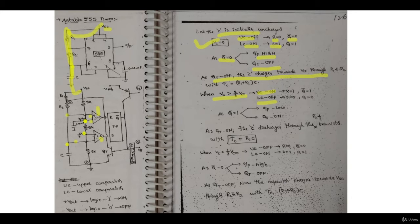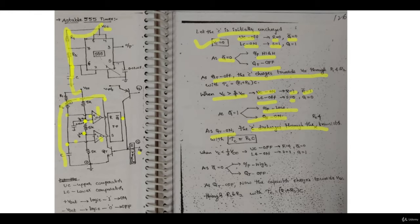So R will be 1 and S will be 0, which gives Q-bar equal to 1 - meaning the output at terminal 3 will be low and Qt will be on. When Qt is on, the capacitor tries to discharge through resistor R2. The capacitor discharges through this path: C, R2, terminal 7, then through the transistor. So the discharging time constant is R2·C, and the charging time constant is (R1 + R2)·C.